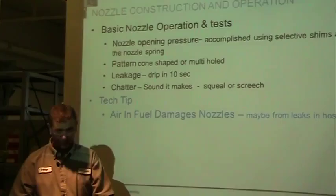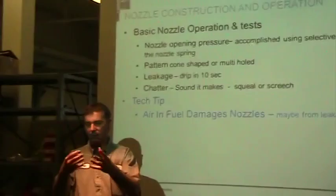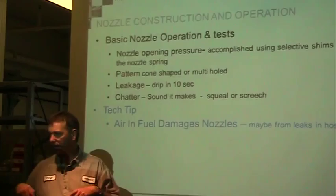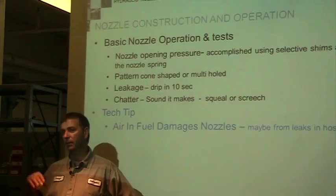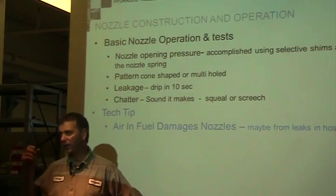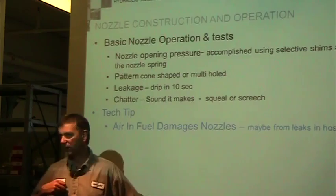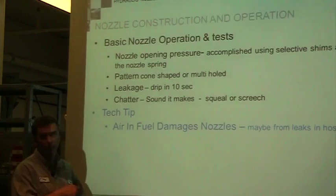For an indirect injection nozzle, the pattern should be a very thin, long conical shape. For a multi-orifice direct injection nozzle, the fuel should come out either straight to the side or slightly downward, and I'm looking at how many holes there are and whether the patterns are similar in shape. The third thing is leakage: bring the pressure up to about 1,700 to 1,750 PSI — if the spec is 1,900 — hold it for 10 seconds, and it should not drip off the end of the injector.